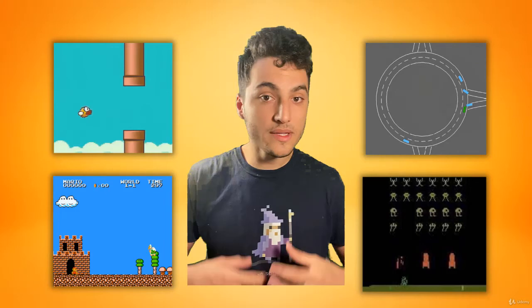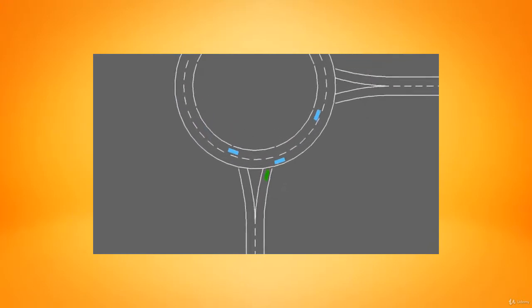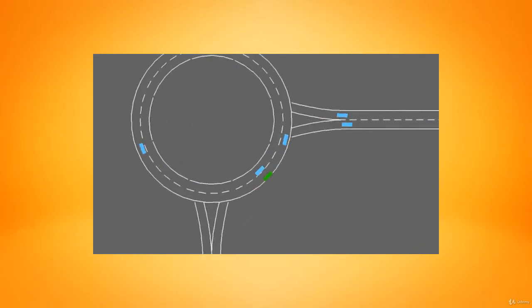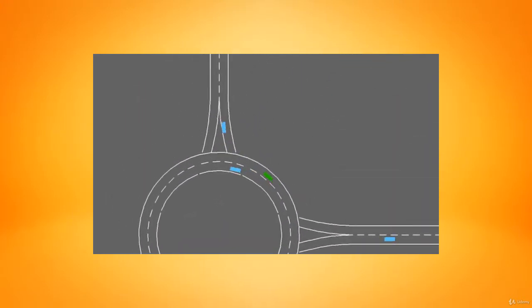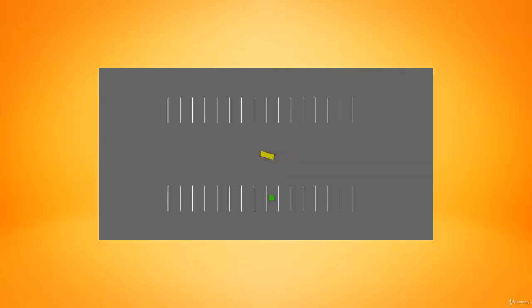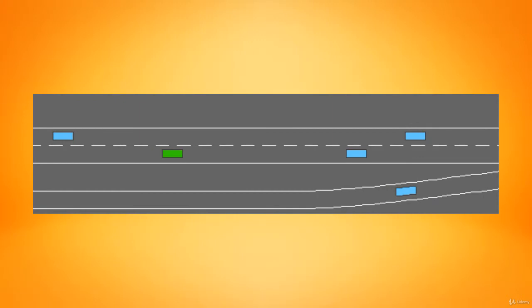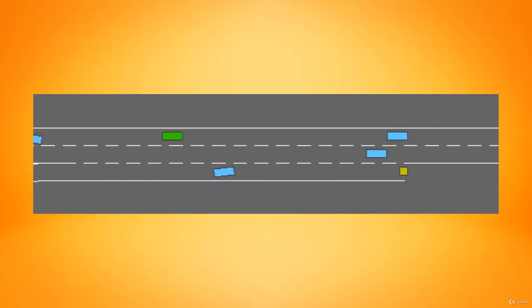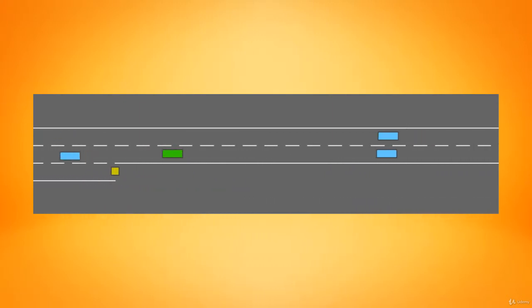Finally, in the last section of the course, we're going to be building an agent which learns to interact on the road. This means we're going to create an agent that can navigate a roundabout, an agent that can park a car, an agent that can merge onto the highway — and you'll learn the skills and tools to apply it to any other environment that you want.